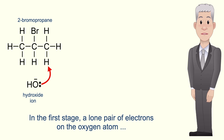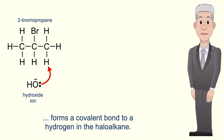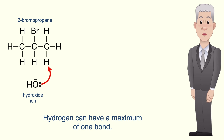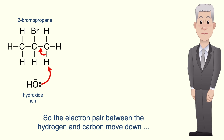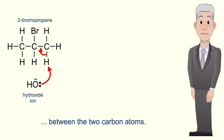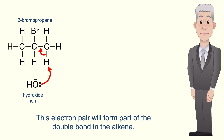In the first stage a lone pair of electrons on the oxygen atom forms a covalent bond to a hydrogen in the haloalkane. Now hydrogen can have a maximum of one bond, so the electron pair between the hydrogen and carbon move down between the two carbon atoms. This electron pair will form part of the double bond in the alkene.